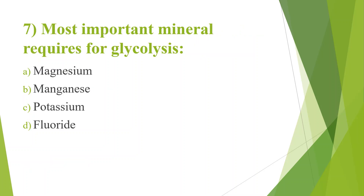Seventh question: Most important mineral required for glycolysis. Option A, Magnesium; Option B, Manganese; Option C, Potassium; Option D, Fluoride. Answer is Option A, Magnesium. Magnesium acts as a cofactor for the enzymes hexokinase, phosphofructokinase, and enolase, which are very important enzymes in glycolysis. Cofactor means minerals that enhance the activity of enzymes. So magnesium has an important role in the glycolytic pathway.